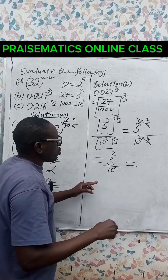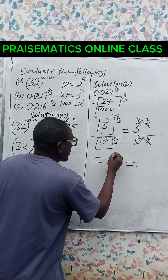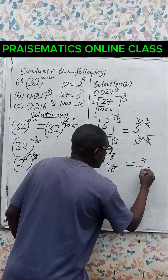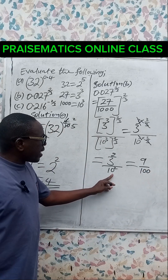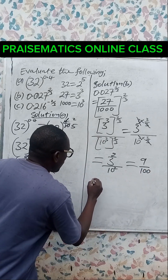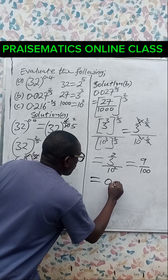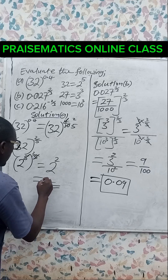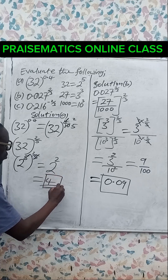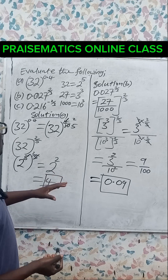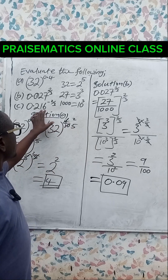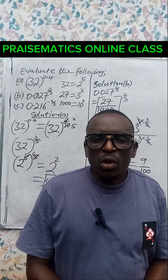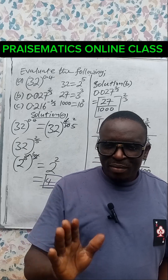And 3 raised to the power 2 is 9, over 10 raised to the power 2, which is 100. So our final answer is 9 over 100, which is 0.09. That is the answer. So 4 is the answer to A and 0.09 is the answer to B. Please try part C and send your answer to the comment section. Thanks for watching and God bless you. Bye-bye.